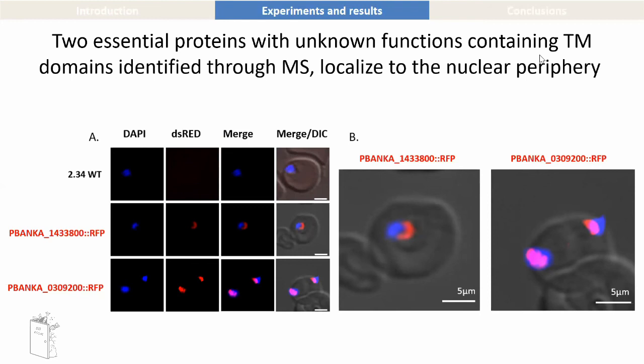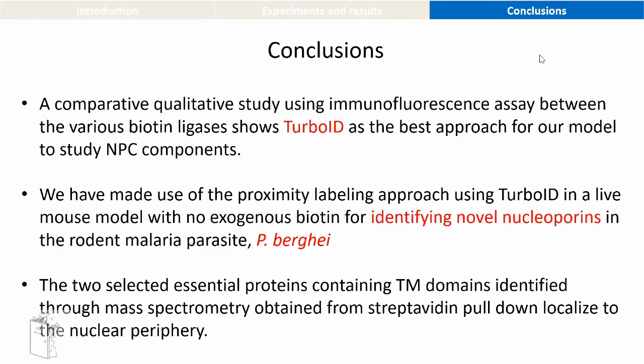It's important to point out that the usual knockout systems and other models don't work with Plasmodium — there is no RNAi with Plasmodium, it does not work. So it's a little tricky, but we're trying to find our way around it. In conclusion, we did a comparative study to identify the nuclear pore proteins of Plasmodium, the malaria parasite. We showed that one of the versions of the BioID system, TurboID, was the best. We used this to identify two novel nups for Plasmodium berghei, and we have shown that they localize to the nuclear periphery.